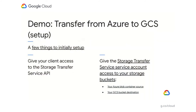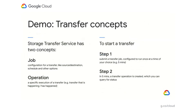To start moving data from Azure Blob Storage to GCS, there's some initial setup: you need to give your client application access to the Storage Transfer Service API, and give the Storage Transfer Service service account access to your source and destination. Once you do that, let's talk through how a transfer actually works. There are two key concepts to understand. The first is the job, which encapsulates the configuration for your transfer — the source, destination, credentials, schedules, and transfer options.